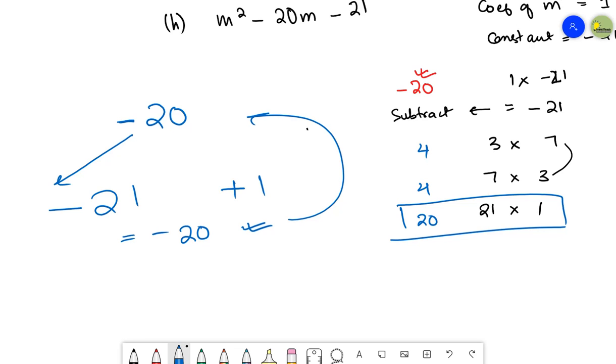Now I know that in place of -20m, the two values I can write are -21m and +1m. 1m can simply be written as m, since the coefficient is 1 by default.